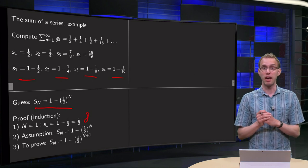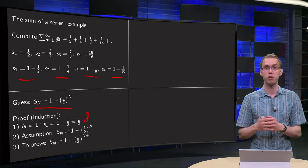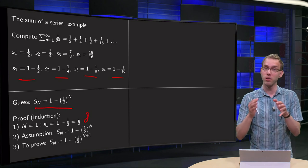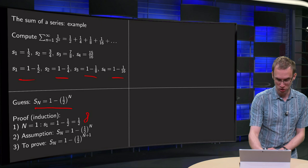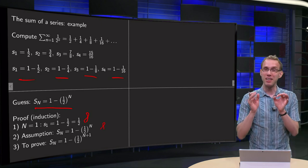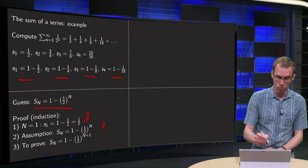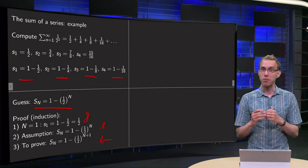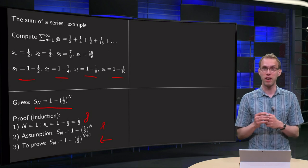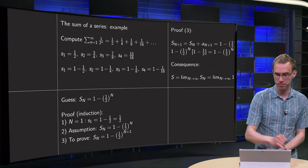Then we have the induction assumption: we assume that our expression is correct up till N — that is the induction assumption. And then, using this assumption, we need to prove that it is true also for N plus 1, so that S_{N+1} equals 1 minus (1/2) to the power N plus 1.